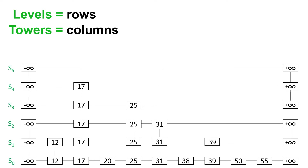One last thing before we get to an example: every level has about half the nodes of the one below. This is because skip lists are a probabilistic data structure, and this all happens during insertion. Essentially, we flip a coin and increase the size of the tower if it's heads, and stop if it's tails.